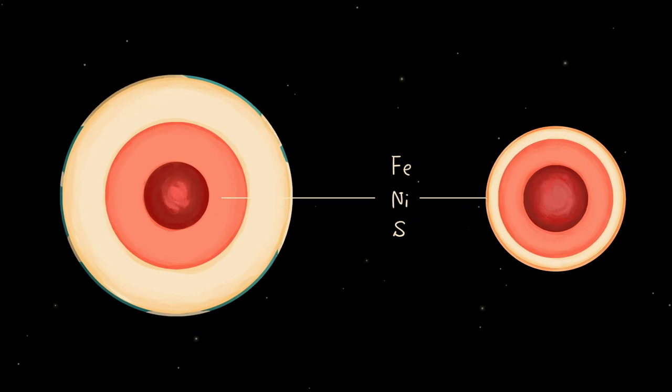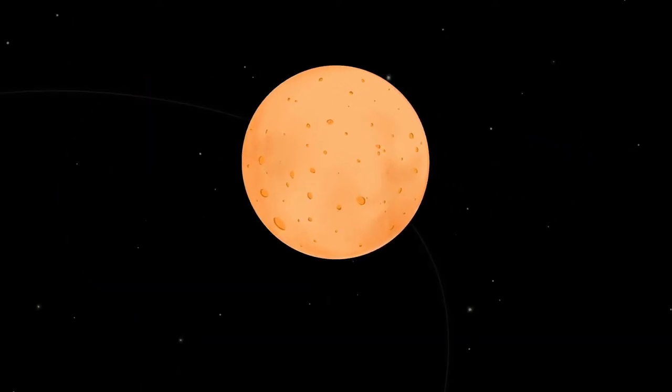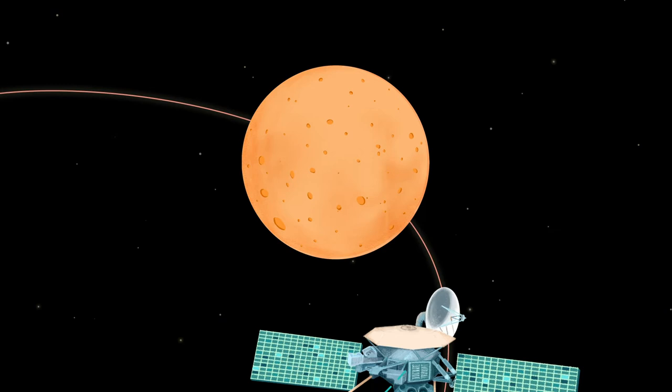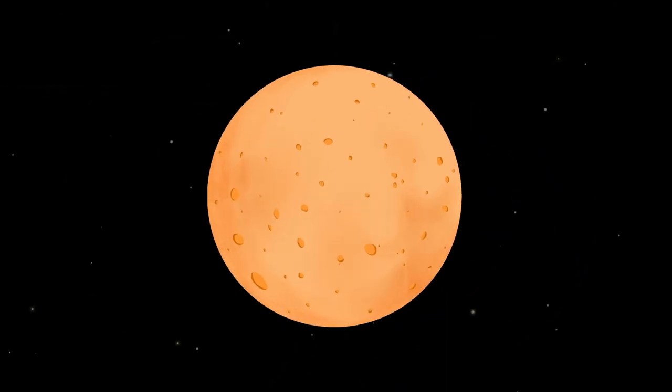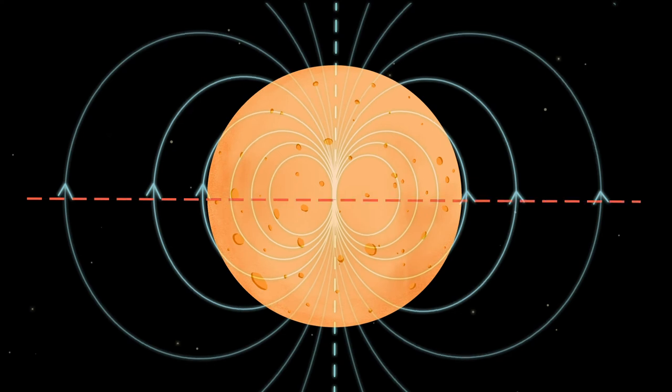The same materials are believed to participate in dynamo action to generate Mercury's present-day magnetic field, which has been detected from space missions, such as Mariner 10 and Messenger. Mercury seems to have a bar magnet-like field that is slightly offset from the center.